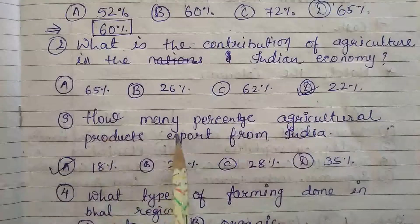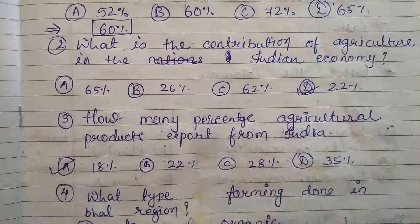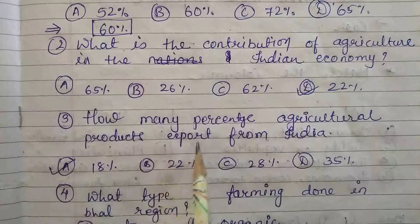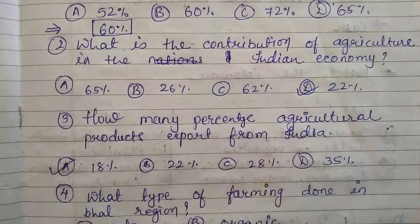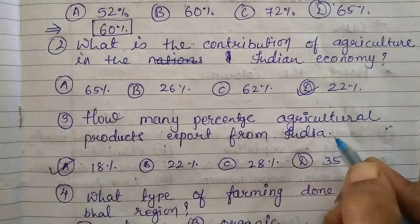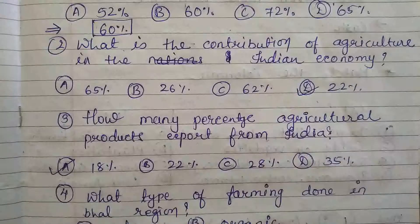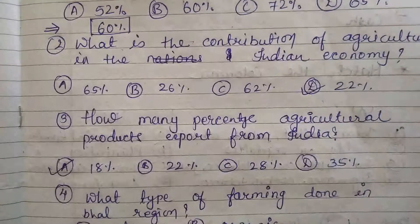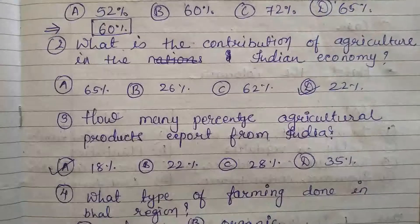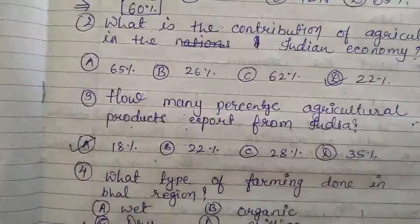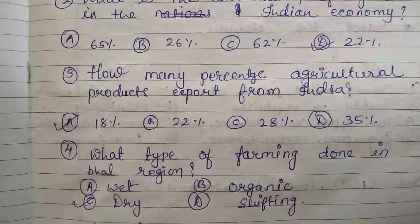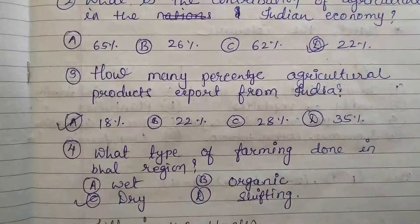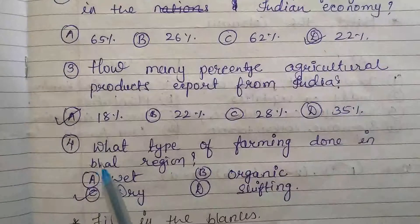The next question: how many percentage of agricultural products are exported from India? Bharat mein se kitne percentage agriculture products export ki jaati hain, jisse hum foreign exchange earn kar sakte hain. Options are 18%, 22%, 28%, and 35%. The answer is 18%.